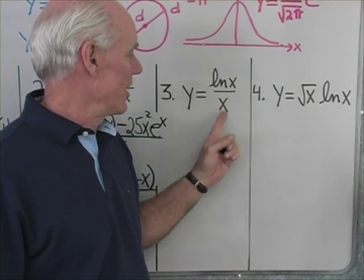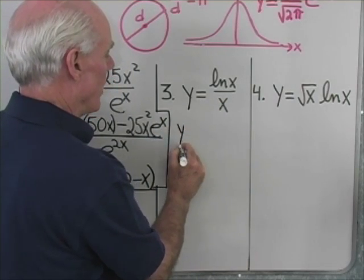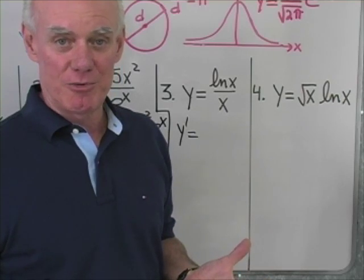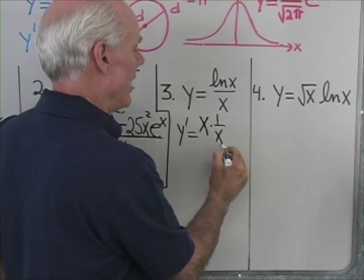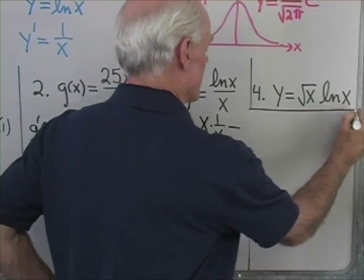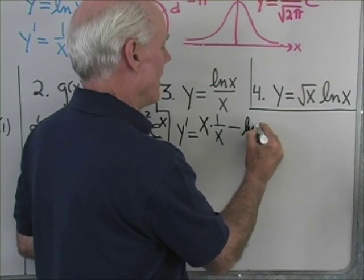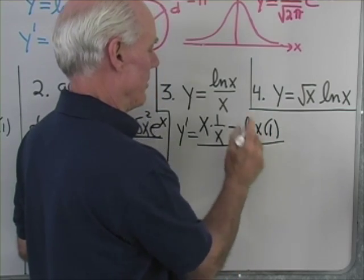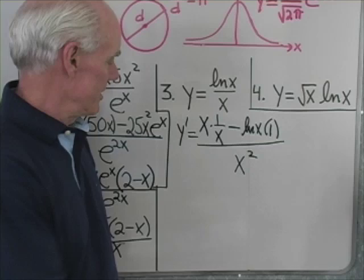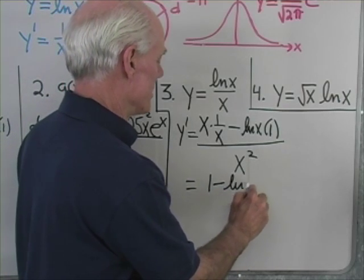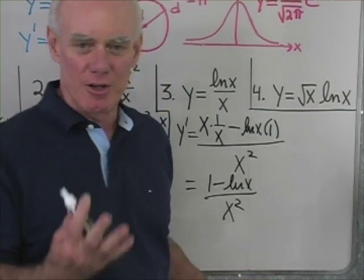Problem 3: y equals log x over x. I'm going to use the quotient rule again. y prime equals the denominator, x, times the derivative of the numerator — the derivative of log x is 1 over x — minus the numerator, log x, times the derivative of the denominator, which is 1, all divided by the denominator squared, x squared. So I have x times (1 over x) minus log x, all over x squared, which simplifies to 1 minus log x over x squared.